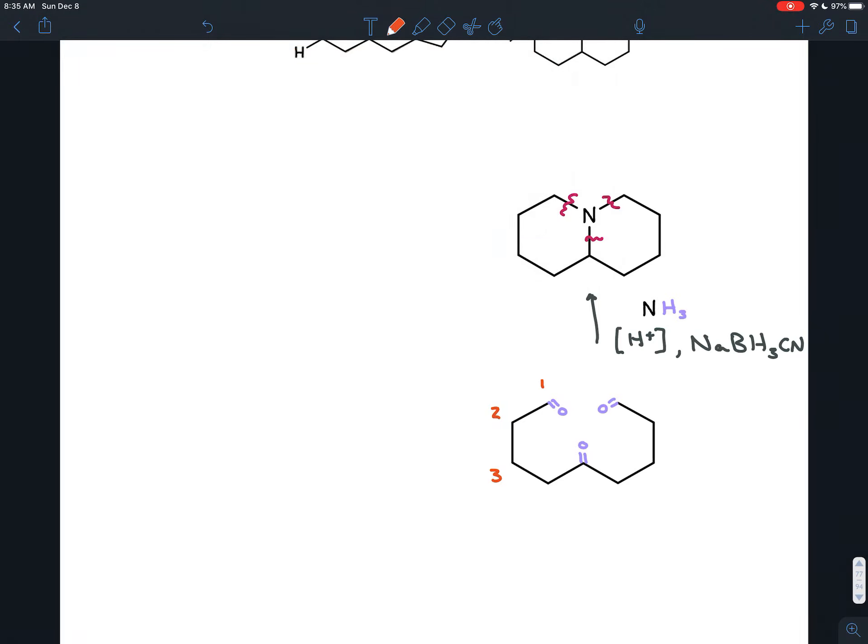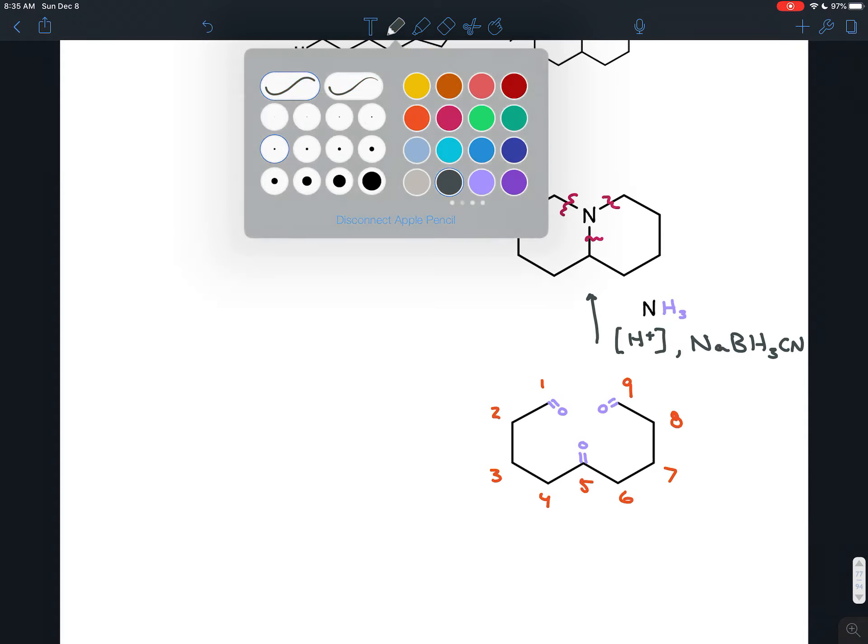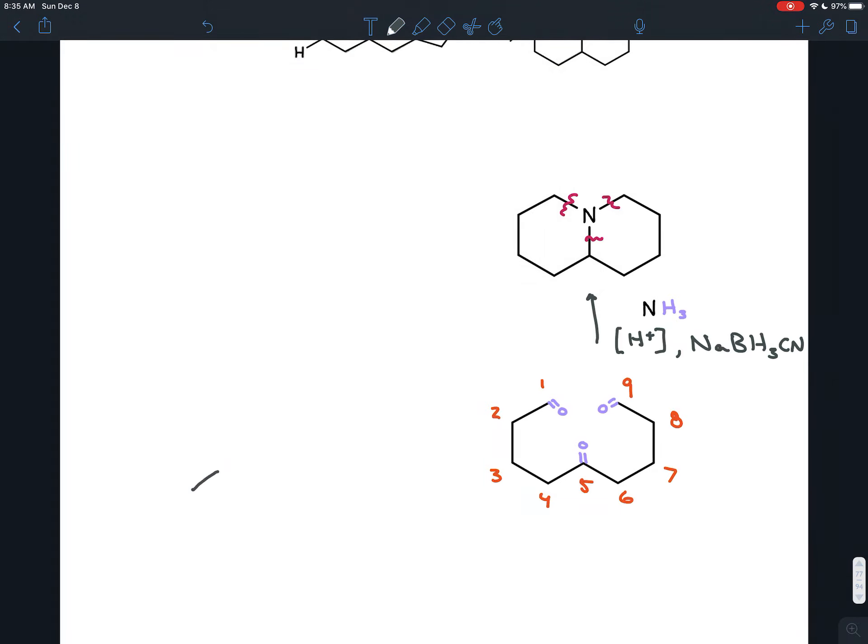So let's try to do that. Just numbering this to keep track of things, I'm going to number this seven, eight, nine carbons. So if we had nine carbons, that's one, two, three, four, five, six, seven, eight, nine.